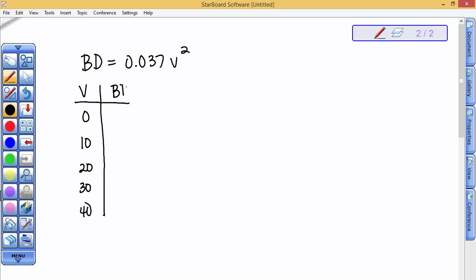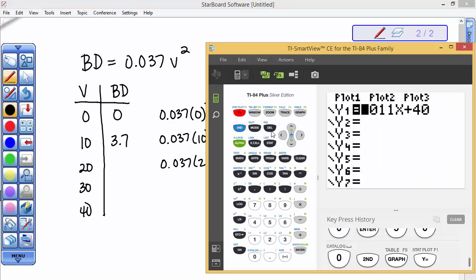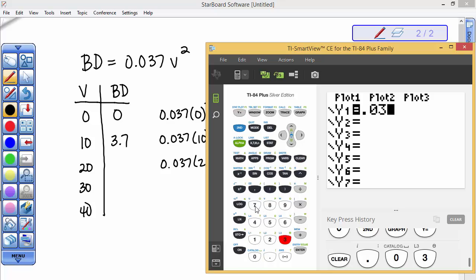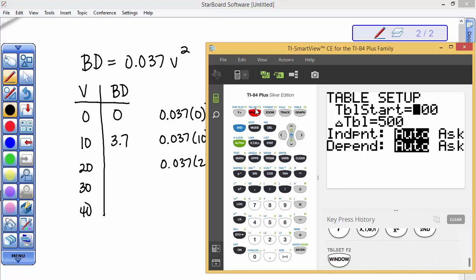You could take 0.037 times 0 squared which is nothing, and then you could take 0.037 times 10 squared. Well 10 squared is 100, so that one's going to be 3.7, but I'm not going to be able to keep doing this in my head. So I'm going to get my calculator out to do this. I'm going to put the formula in, and I have 0.037 times x squared. I want it to start the table at 0 and go in increments of 10 automatically.